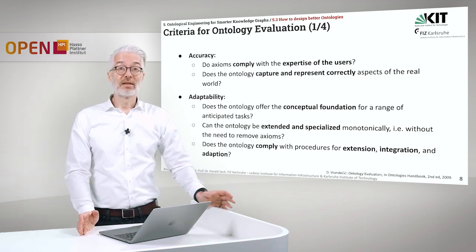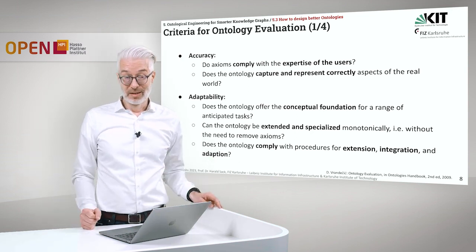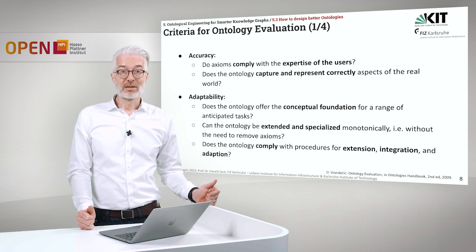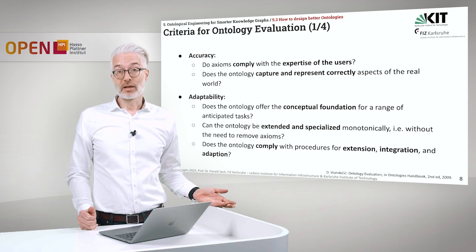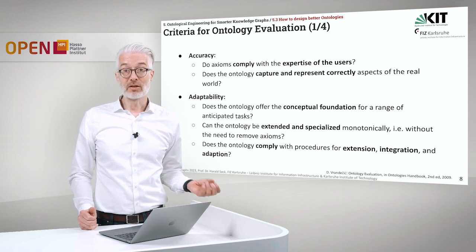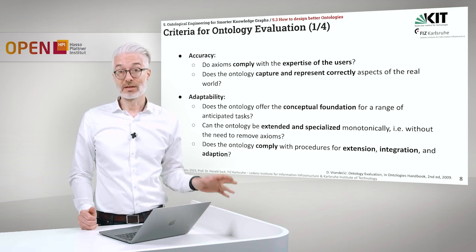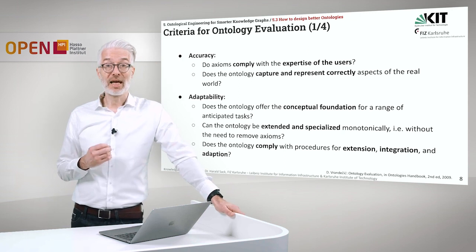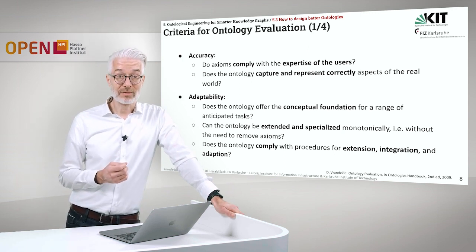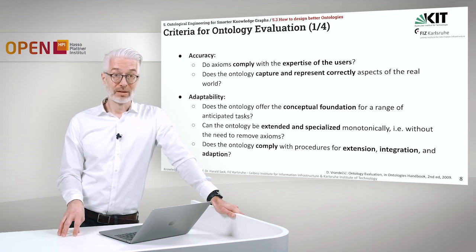Let's have a look at the criteria for ontology evaluation — and there are a lot. The first thing we have to look at is accuracy. We simply ask questions like: do the axioms we have defined really comply with the expertise of the users of the ontology? And does the ontology capture and represent correctly aspects of the real world? This is accuracy — a very important aspect.